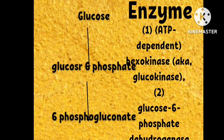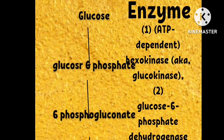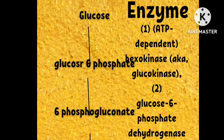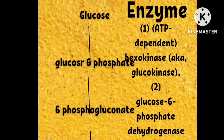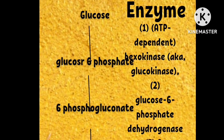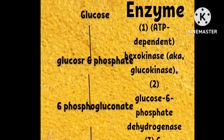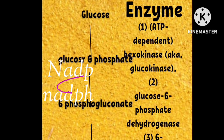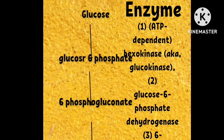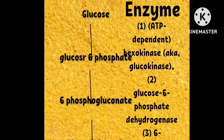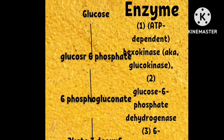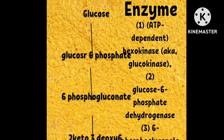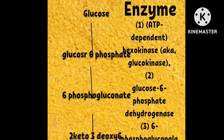Next, glucose-6-phosphate is converted to 6-phosphogluconate. The enzyme used here is glucose-6-phosphate dehydrogenase, and NADP⁺ is reduced to NADPH in this step.